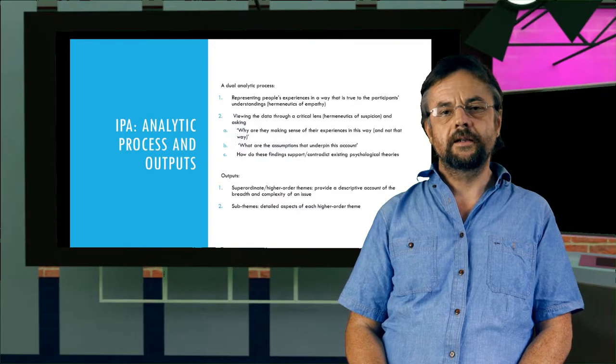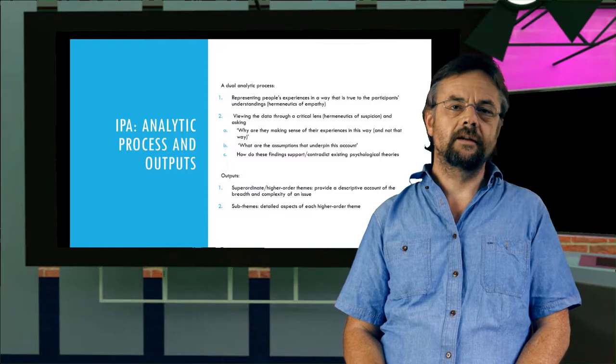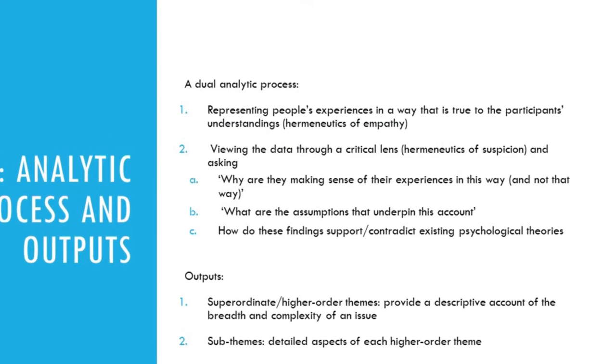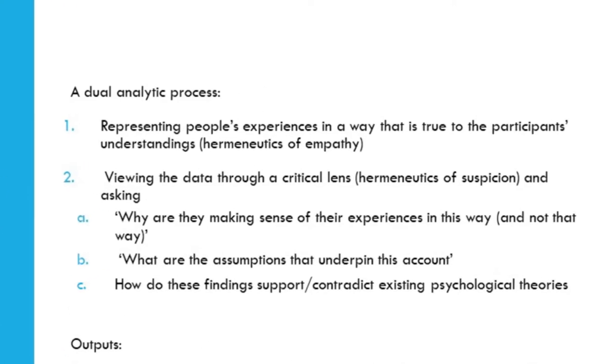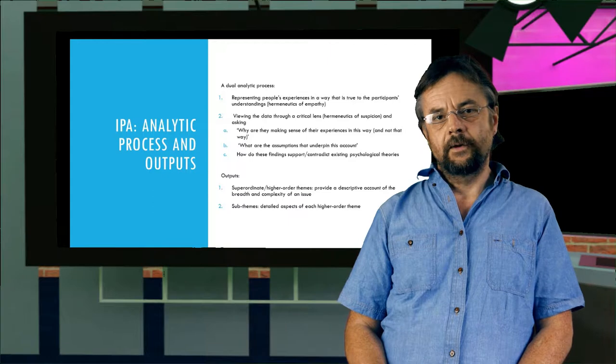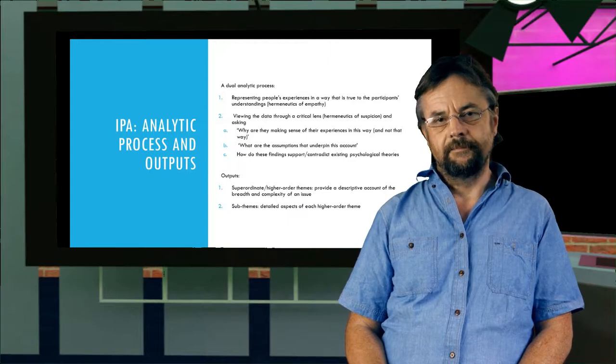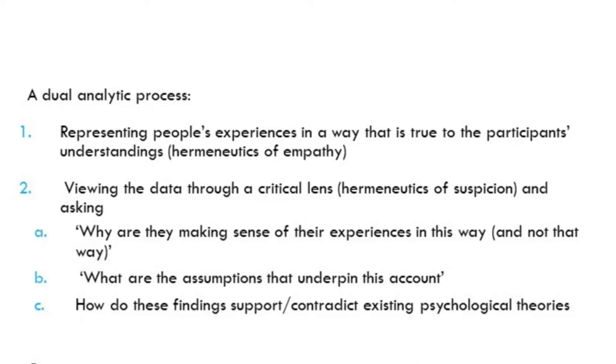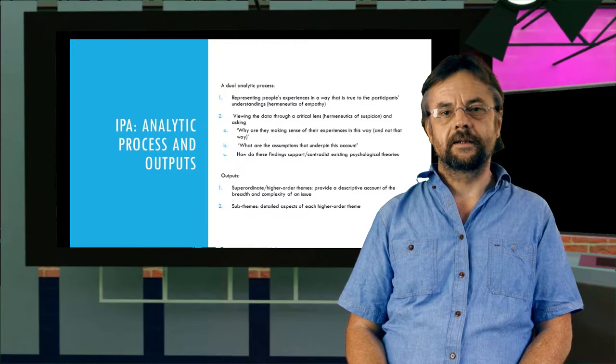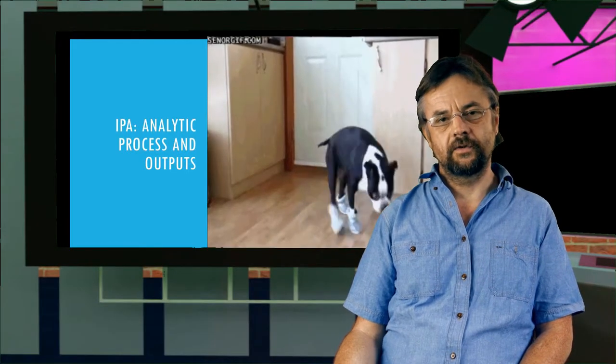So where are we going with IPA? What's it trying to do? Well, it's a dual purpose. First, it seeks to represent people's experience in a way that's true to them. So this is like the descriptive analysis we talked about in part one of lecture four. Now IPA gives a fancy name, the hermeneutics of empathy.